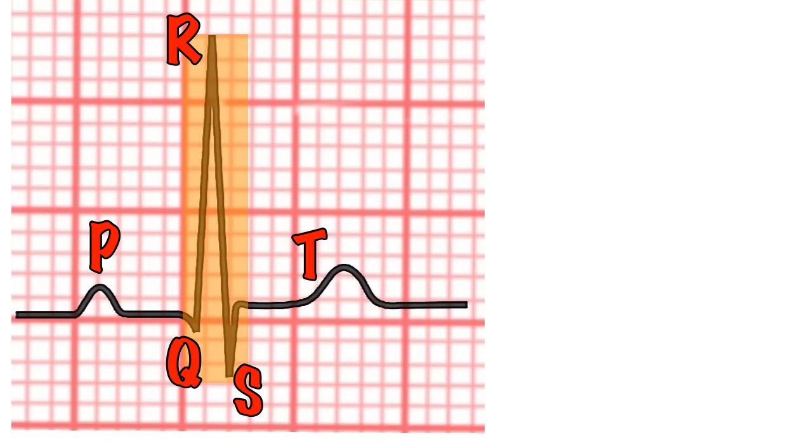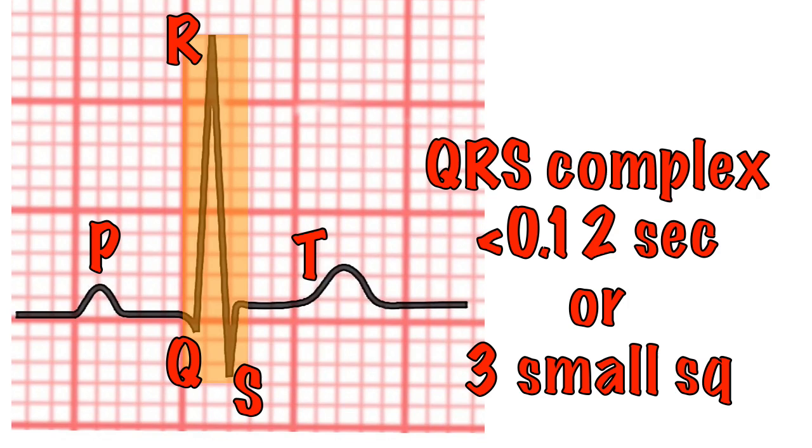Ventricular depolarisation causes the QRS complex and should take no longer than 0.12 of a second or 3 small squares on an ECG.